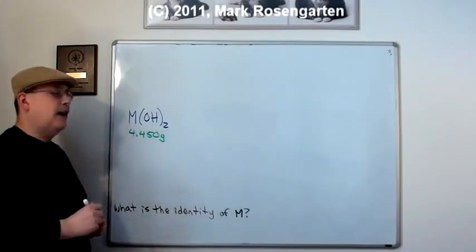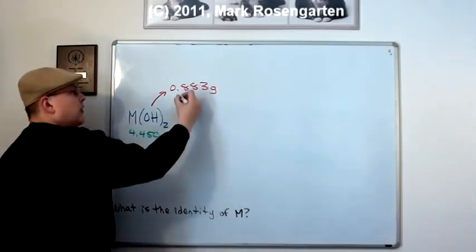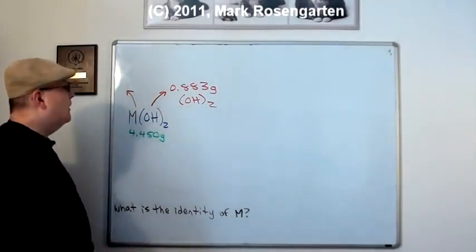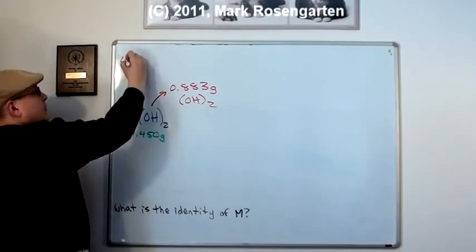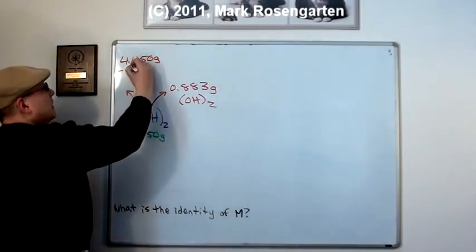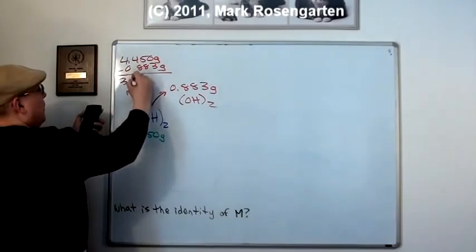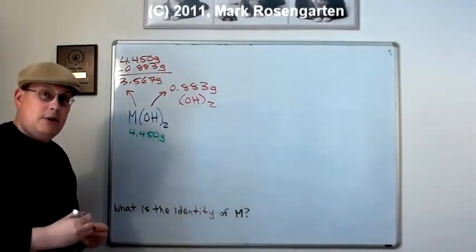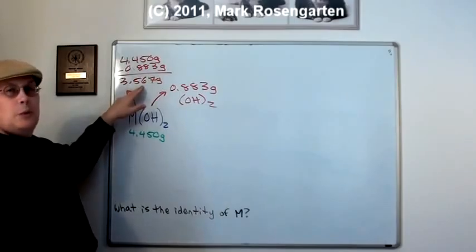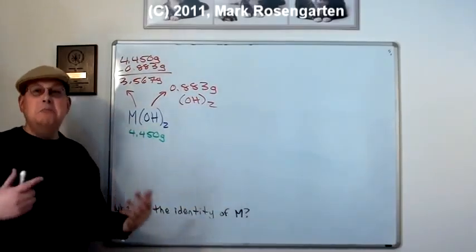We know the compound weighs 4.450 grams. We know that 0.883 grams of that comes from OH2. So the remainder of it comes from the metal itself. So to find the mass of the metal, take the total mass, 4.450 grams, and subtract from it the amount that's not that metal, 0.883 grams. And that comes out to 3.567 grams. This is the mass that's hydroxide that we figured out from the previous problem. This is what we get when we take the total mass and subtract from it the mass of the hydroxide. That gives us the mass of the cation, this metal ion.